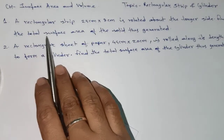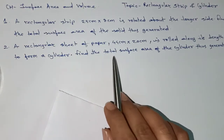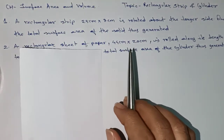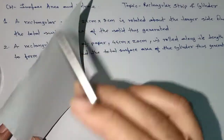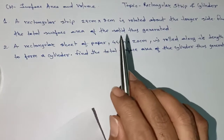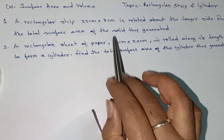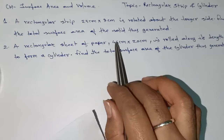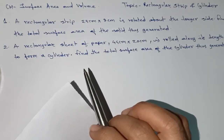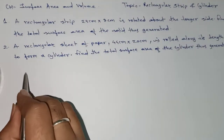In both cases we are finding surface area, but for the second one you need to find the curved surface area — because in a hollow cylinder we don't have a base, it's totally hollow. For the first one we find the total surface area. Both questions look the same but students make a mistake here.